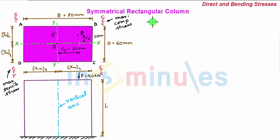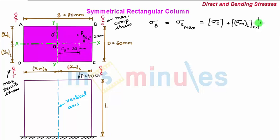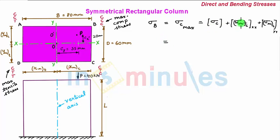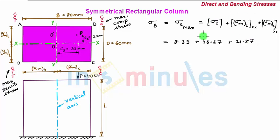Now we determine the stress at point B, where the stress will be the maximum compressive stress. This is given as the direct stress sigma_C plus the maximum compressive stress due to bending about the XX axis plus the maximum compressive stress due to bending about the YY axis. Substituting the values: 8.33 + 16.67 + 21.87. Since all are compressive, we consider all positive, giving a maximum compressive stress of 46.87 N/mm².